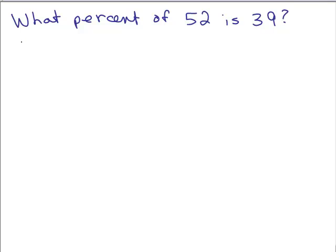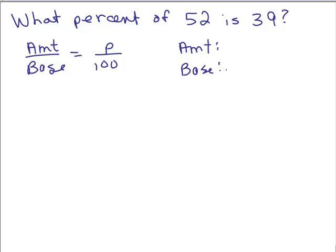Here's the next problem. What percent of 52 is 39? Again, we're looking for the percent. So remember, we've got the amount over the base is going to be P over 100. Let's write down what the amount is and what the base is. It's always easier to find the base. Look for the word 'of', of 52. So the base is 52. So the other number in this case is the amount.